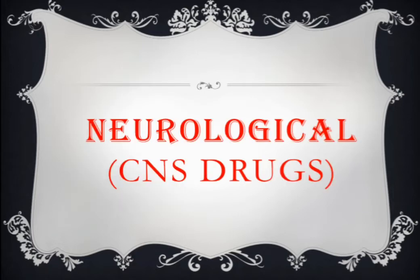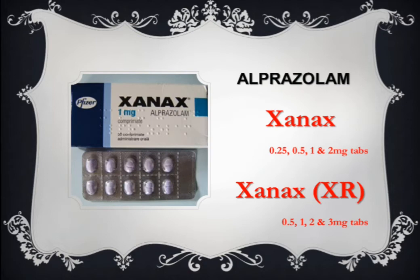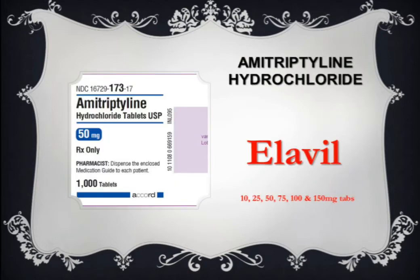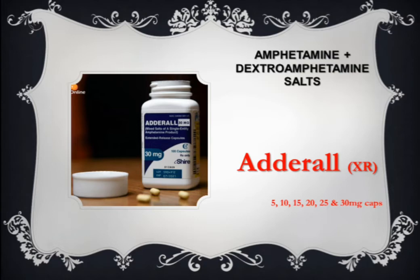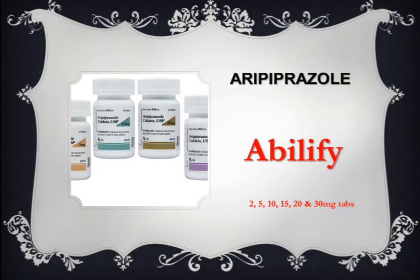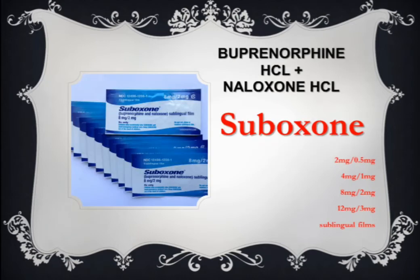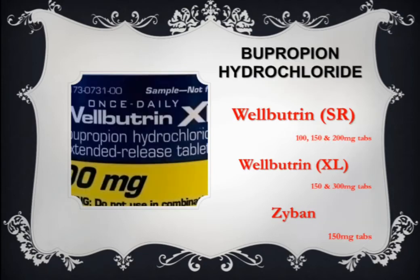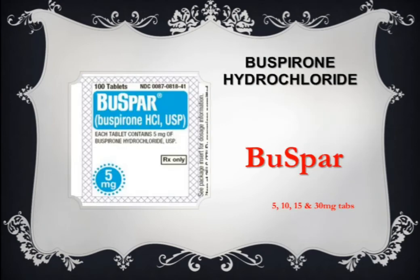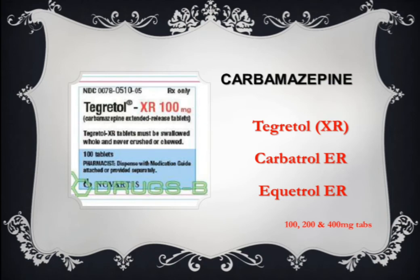Next category: neurological. Alprazolam has trade name of Xanax-XR. Amitriptyline hydrochloride, trade name: Elavil. Amphetamine and dextroamphetamine salts, trade name: Adderall-XR. Aripiprazole, trade name: Abilify. Buprenorphine HCL with naloxone HCL have trade name of Suboxone. Bupropion hydrochloride, trade names: Wellbutrin and Zyban. Buspirone hydrochloride, trade name: BuSpar. Carbamazepine, trade names: Tegretol-XR, Carbatrol, and Epitol.